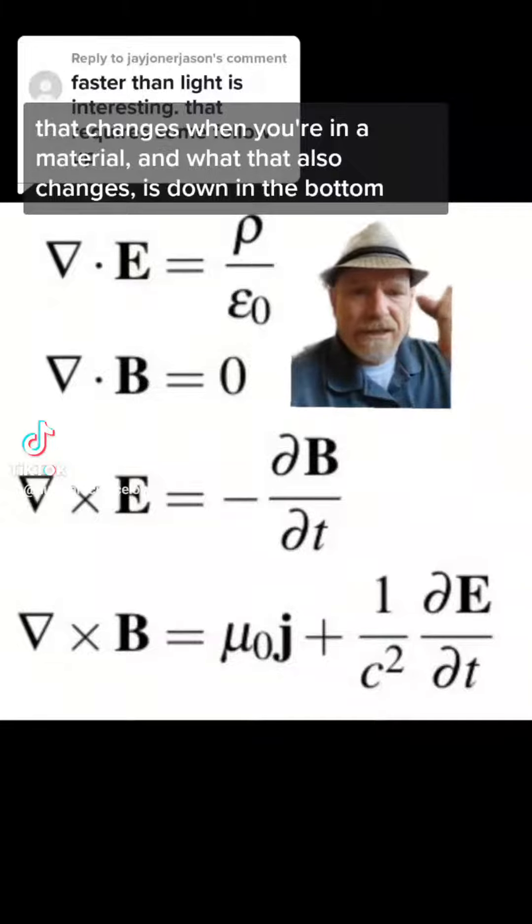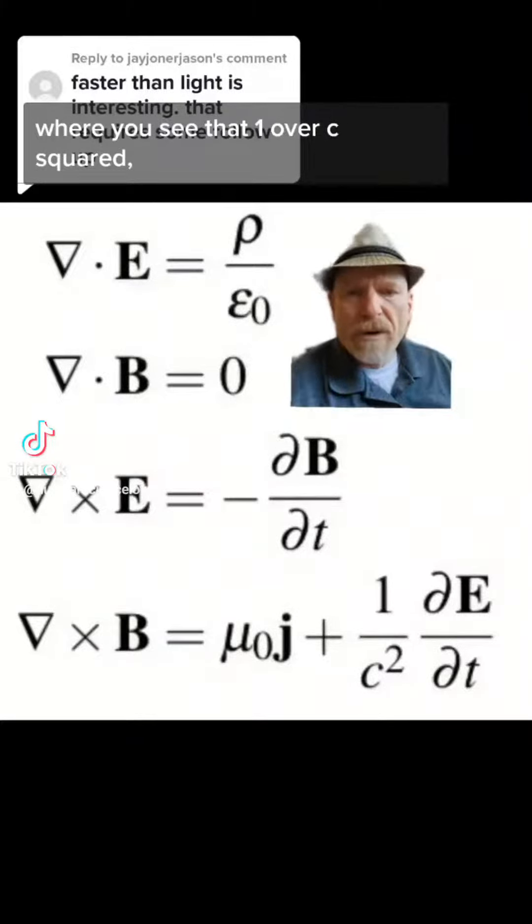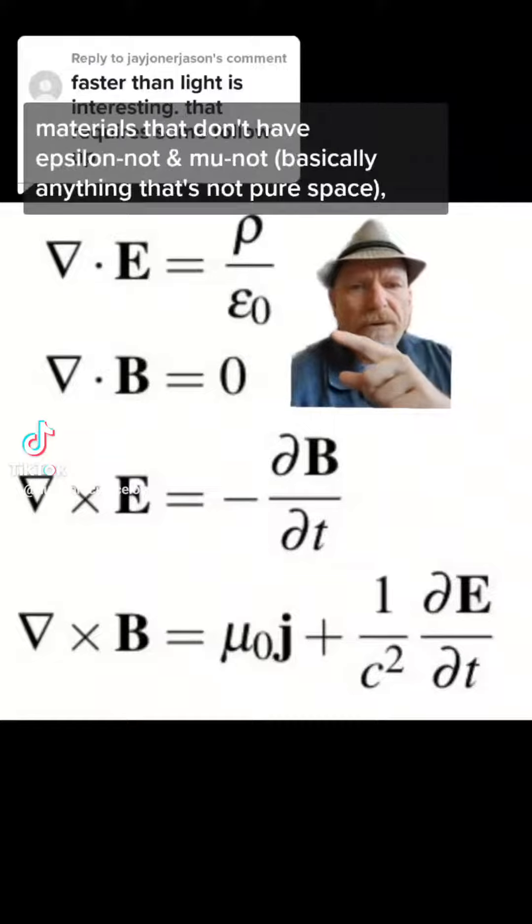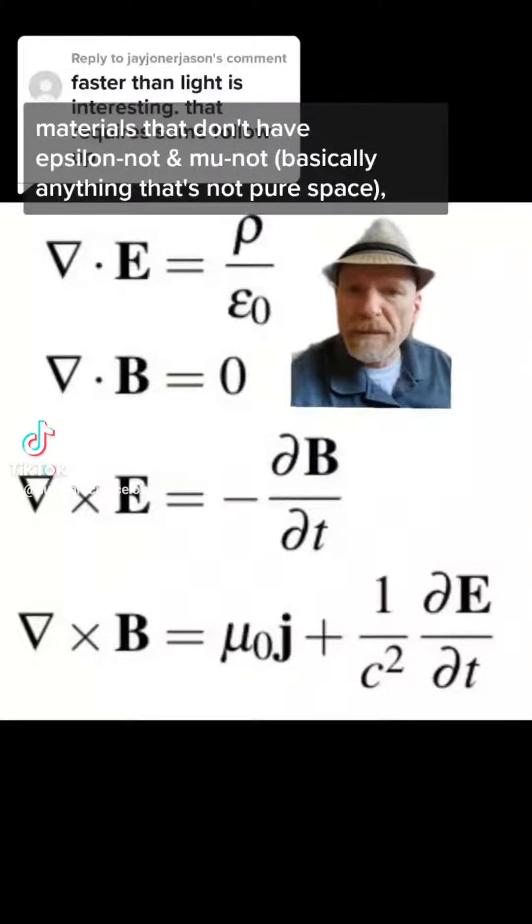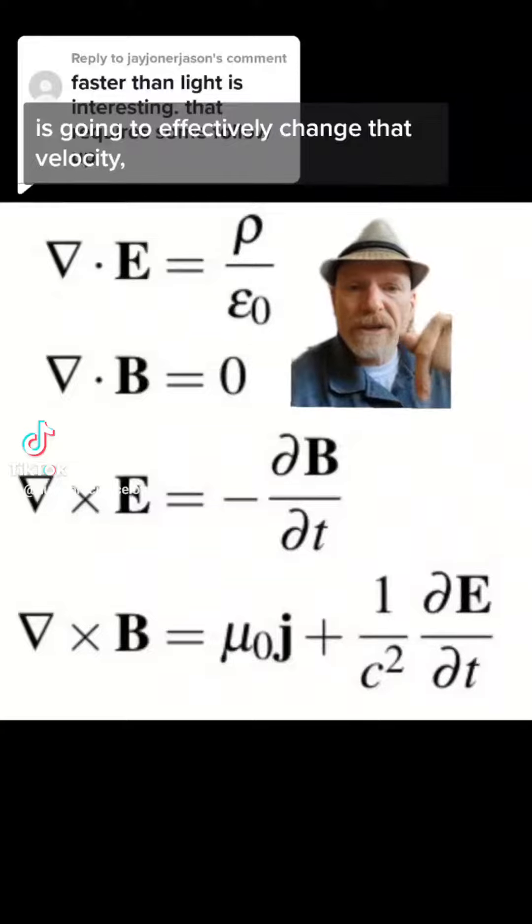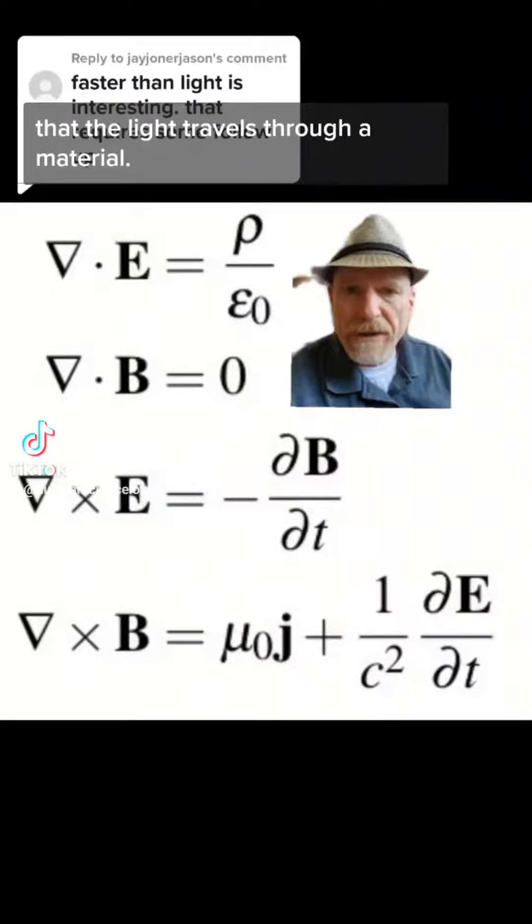What that also changes is down in the bottom, where you see that one over c squared. The effective light through materials that don't have epsilon knot and mu knot, basically anything that's not pure space, is going to effectively change that velocity that the light travels through a material.